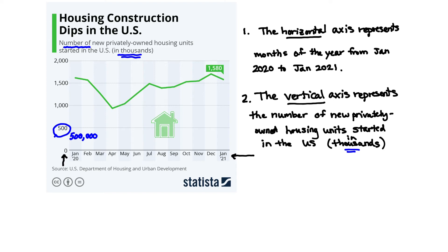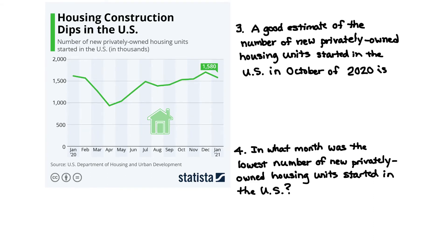Let's look at two questions regarding this line graph. Here's the first question: what is a good estimate of the number of new privately owned housing units started in the U.S. in October of 2020?